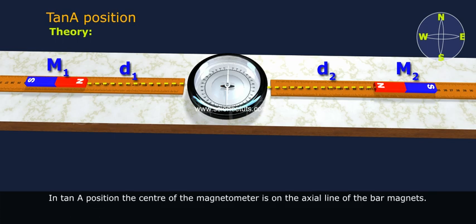In TanA position, the center of the magnetometer is on the axial line of the bar magnets.